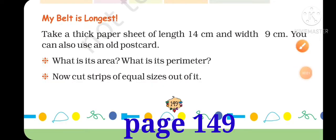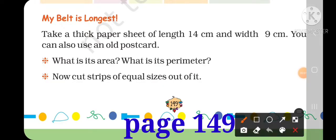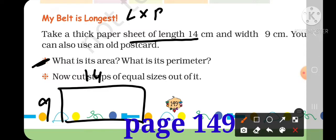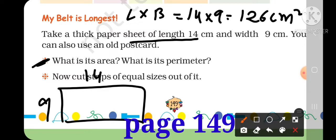This is a thick paper sheet of length 14 cm. You have a paper sheet which length is 14 cm and width is 9 cm. Now we can take an old postcard and calculate its area. Area is length into breadth — the rectangle formula. Length is 14 and breadth is 9, so 14 into 9 is 126, so 126 cm square.